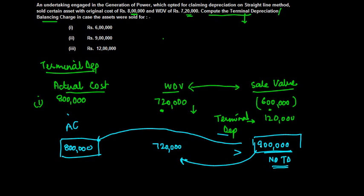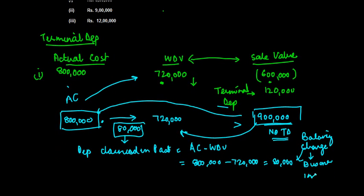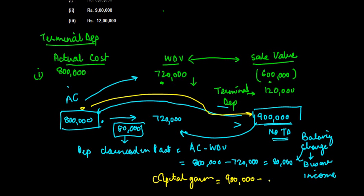But in this case, what is happening is this 9 lakh is basically two things. Out of this 8 lakh, you have actually claimed a depreciation of 80,000. So whatever depreciation has been claimed in the past—depreciation claimed in the past, or in other words, the difference between the actual cost and the written down value, which is 8 lakh minus 7.20, 80,000—this is taxed as balancing charge, which is taxed as business income. And the difference between the actual cost and the sale consideration is capital gains, which is 9 lakh minus 8 lakh.